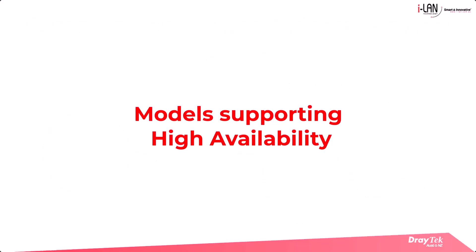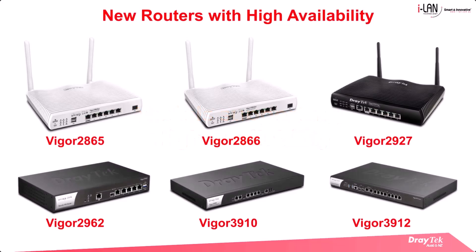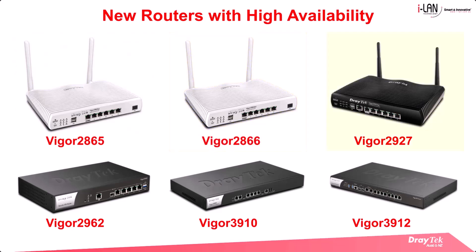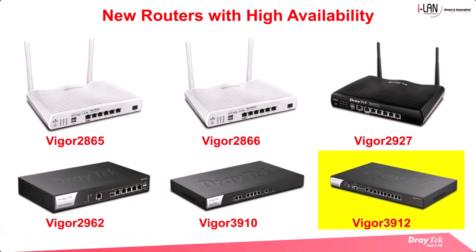Most dual WAN and multi WAN Draytek routers support high availability. That includes the Vigor2865 series, the Vigor2866 series, the Vigor2927 series, the Vigor2962 series, and the Vigor3910 and Vigor3912.